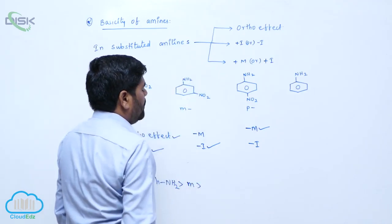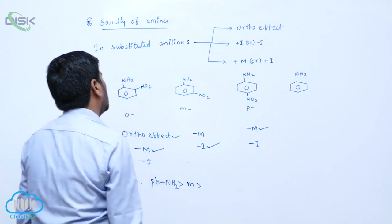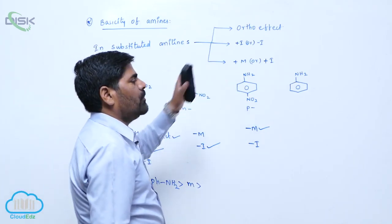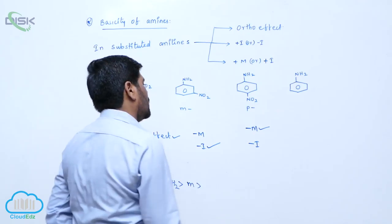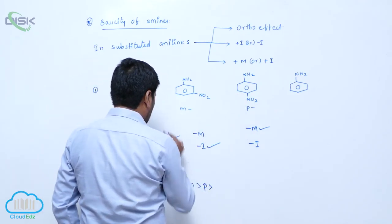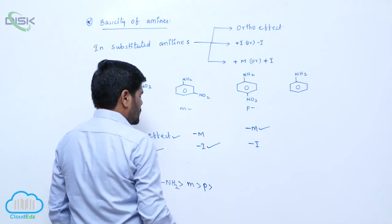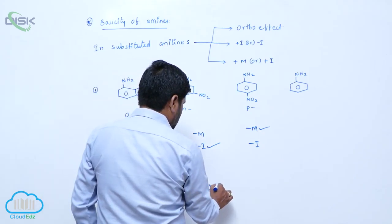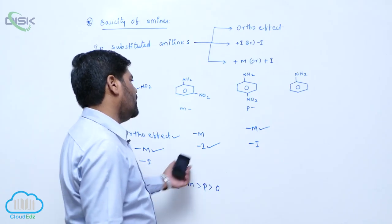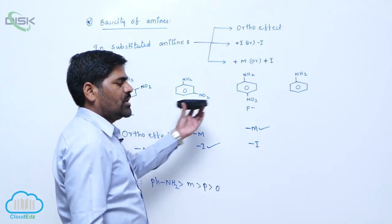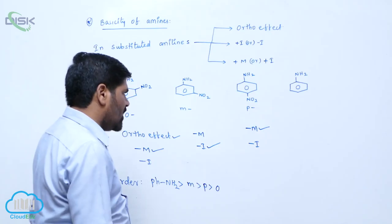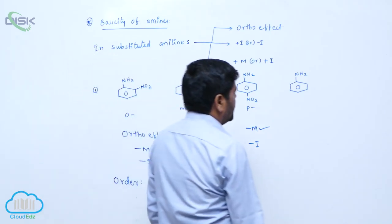Meta-Nitroaniline is more basic after Aniline. Here the Ortho-Effect is more dominant compared to the Para-isomer, so definitely Para-Nitroaniline is more basic than Ortho-Nitroaniline. This is the order of basic nature of Nitro-Substituted Aniline.